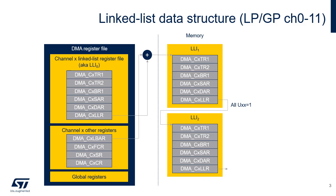LLIN provides the offset used to locate LLI N plus 1. When the link is performed, the channel X linked list register file is updated from the values read in the LLI 1 data structure. Later, when the transfer related to LLI 1 has been completed, the LLI 2 data structure will be loaded into the channel X linked list register file. Since all UXX control bits are assumed to be one, the entire channel X linked list register file is updated.